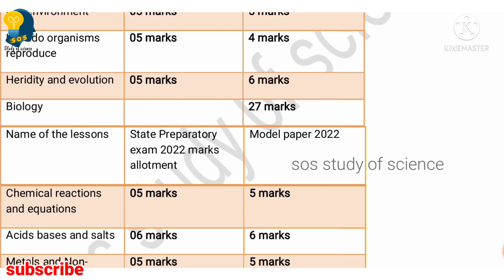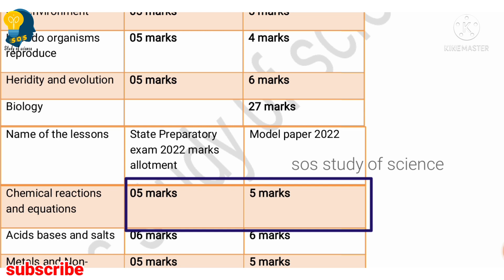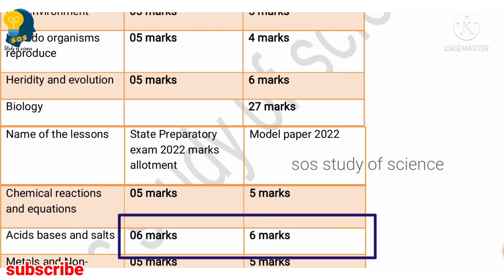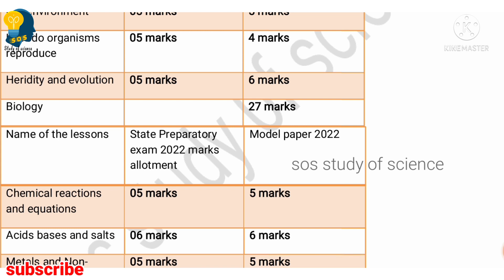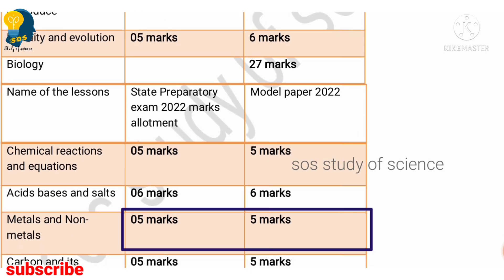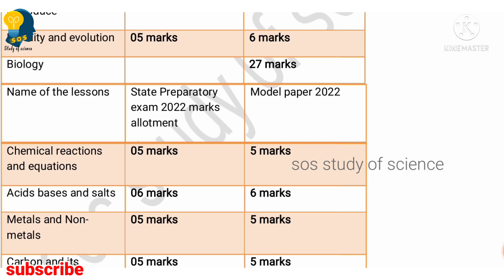In the chemistry part, for the lesson Chemical Reactions and Equations, five marks had been allotted in both the model question paper and the preparatory paper, so you will definitely get five marks in the board examination. Moving to Acids, Bases and Salts — six marks has been given in both the model paper and the preparatory paper, so you will get six marks in the board examination. Moving to Metals and Non-metals — five marks in the model paper as well as five marks in the preparatory paper, so there is no change in both the papers.